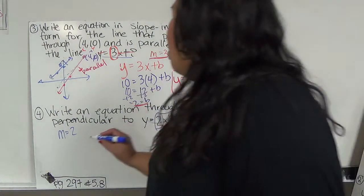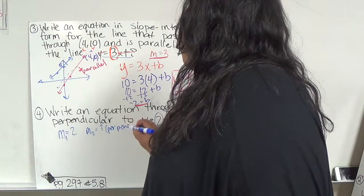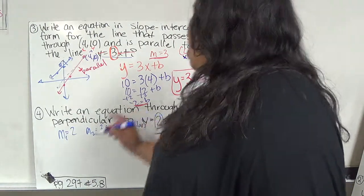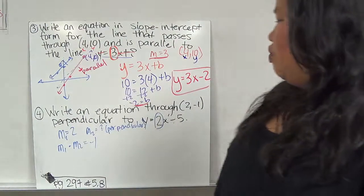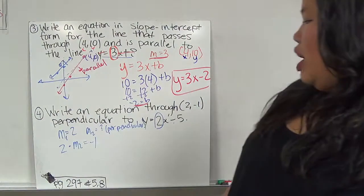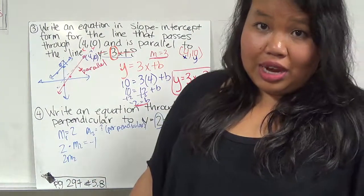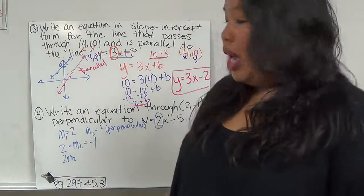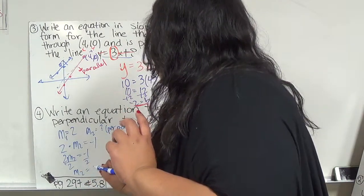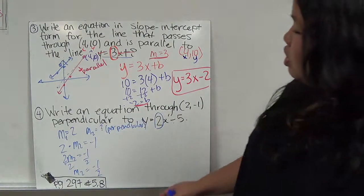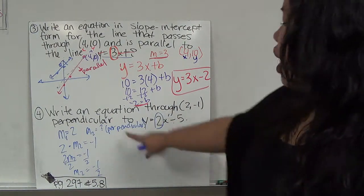I can do it one of two ways. I know if this is my m1 and I'm looking for my m2, when I multiply m1 times m2, I get negative 1. I know what m1 is, it's 2. So if I want to solve 2 times m2 equals negative 1, if I divide both sides by 2, my m2 would be negative 1 half. An easier way to do that is I can just take this, flip it, so instead of 2 over 1, I end up with 1 over 2, and I change the sign to negative.